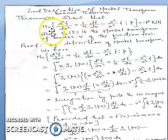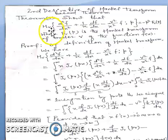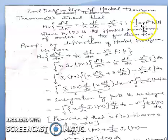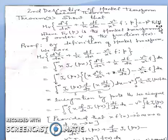So what is the theorem? The theorem states: prove that Hv of d²f/dx² + (1/x)df/dx - (v²/x²)f equals minus p² times fv(p), where fv(p) is the Hankel transform of order v of the function f(x).